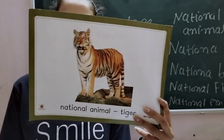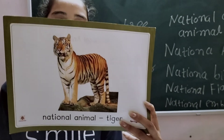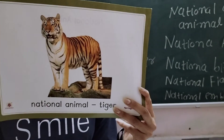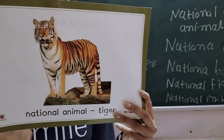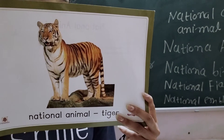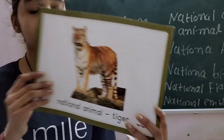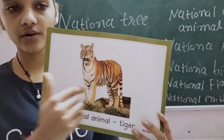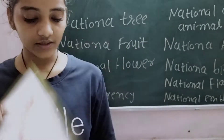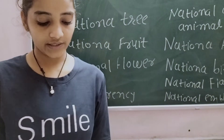Next is the national animal. This is the tiger. It is the national animal of India. It is orange and white with black stripes.